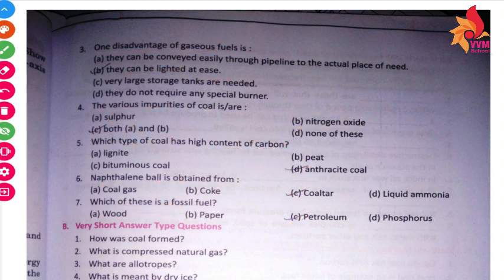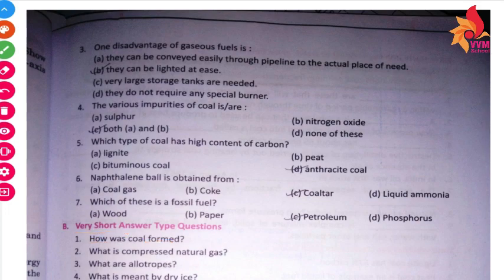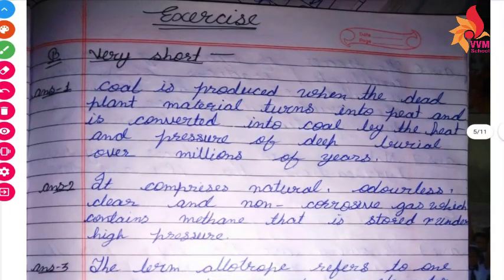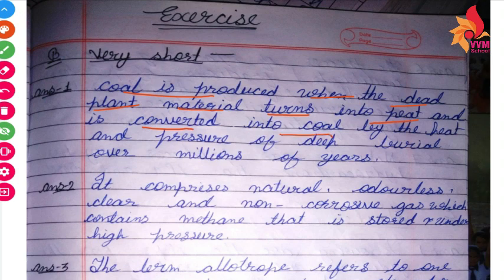Next we are going to discuss very short answer type questions. Our first question is: how was coal formed? Coal is produced when dead plant material turns into peat and is converted into coal by the heat and pressure of deep burial over millions of years.